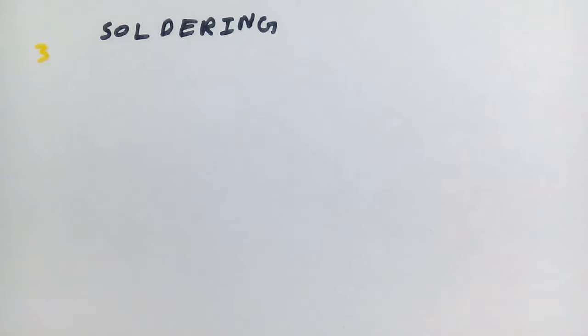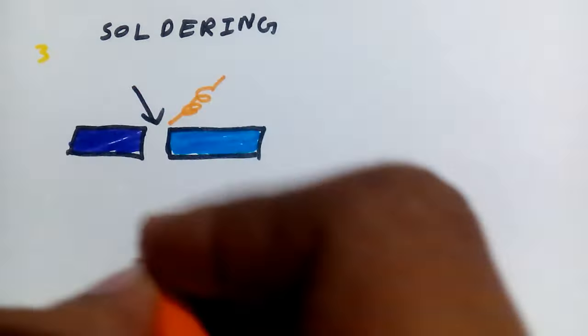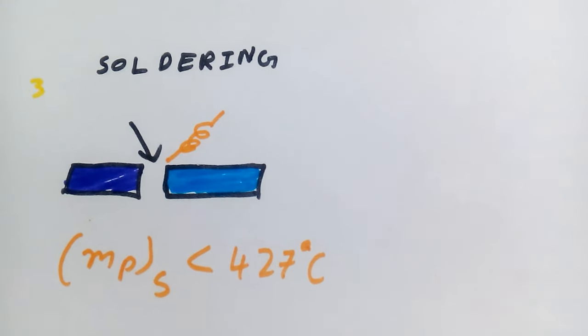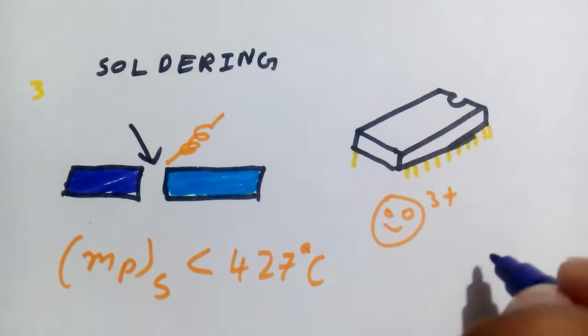Third type of joining process is soldering in which coalescence is produced by heating the rod to a suitable temperature and by using a filler metal with a melting point below 427 degrees celsius. It is used widely in the semiconductor industry due to the simplicity and low cost.